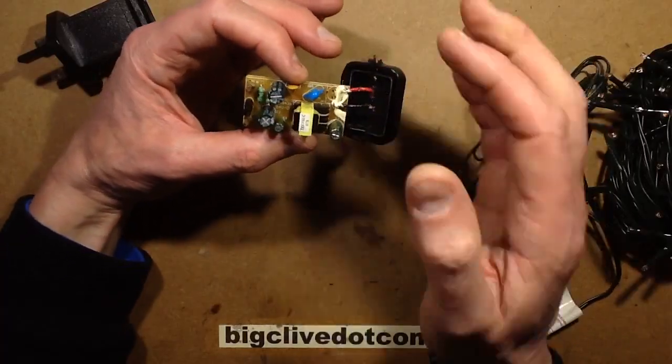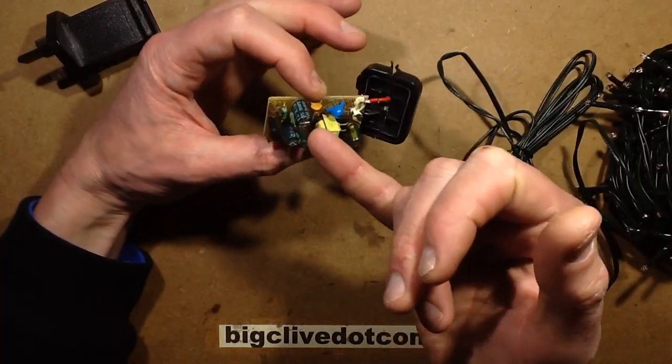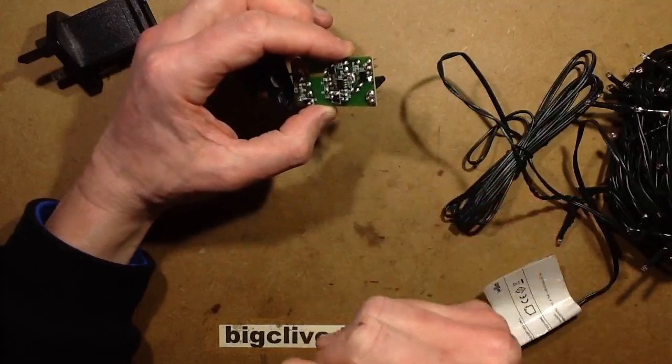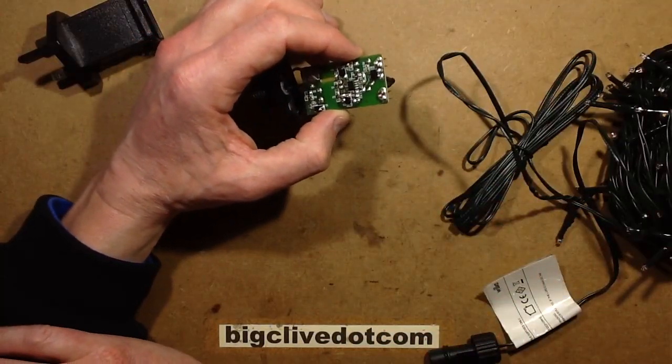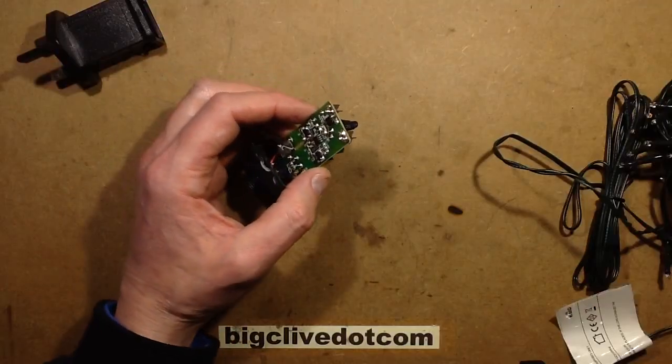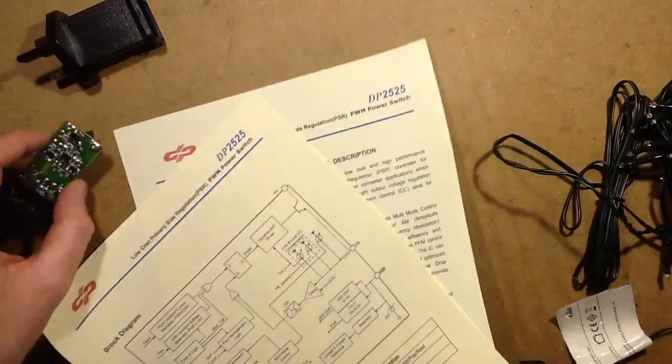The circuit board itself, it does have filtering, it's got a fuse, it's got multiple inductor filtering, and it's got a standard chip called a DP2525. I've already printed the data sheet off for that, and pictures of the circuit board. So, let's start by taking a look at the chip.